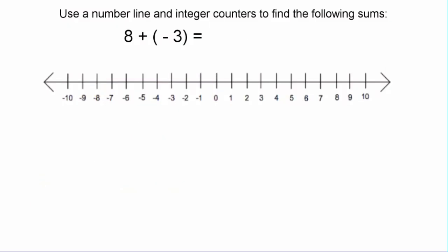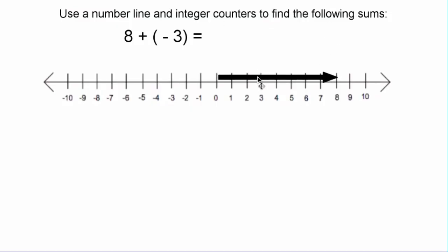In our second example we're going to use the same two strategies, but this time we're going to add together positive eight plus negative three. We'll use the number line technique first, starting with an arrow that represents positive eight — an arrow that starts at zero and moves eight units to the right or in the positive direction. We'll then bring on an arrow that starts at zero and goes three units to the left, representing negative three.